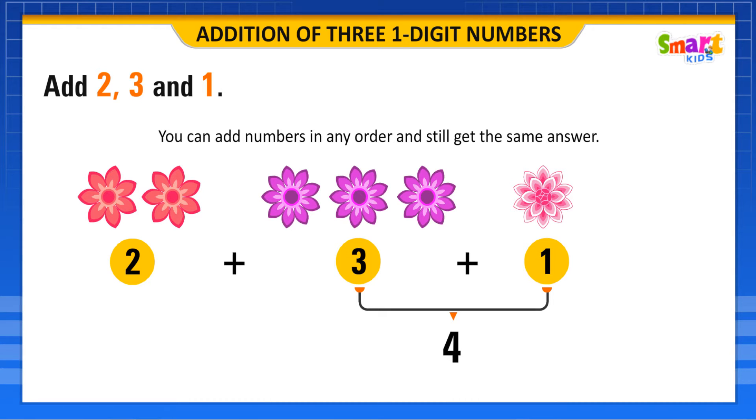Now, we add the first number 2 to the sum, which is 4. So, 2 plus 4 is equal to 6.